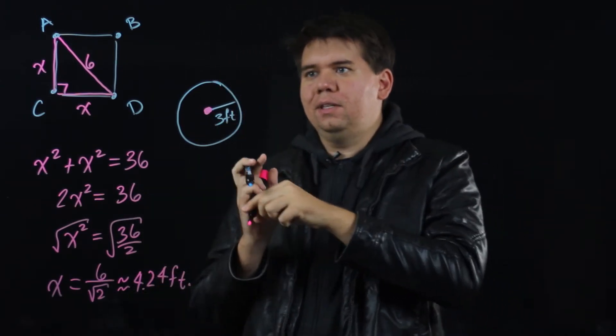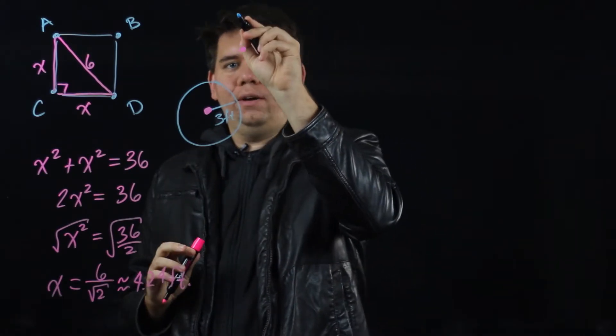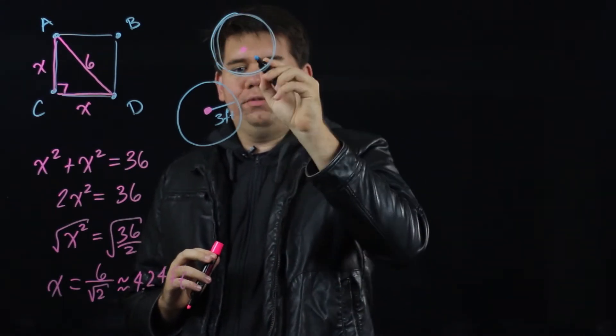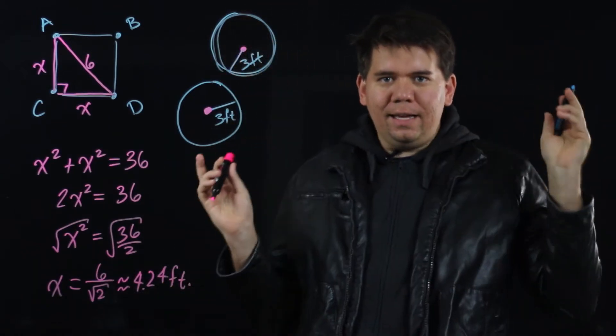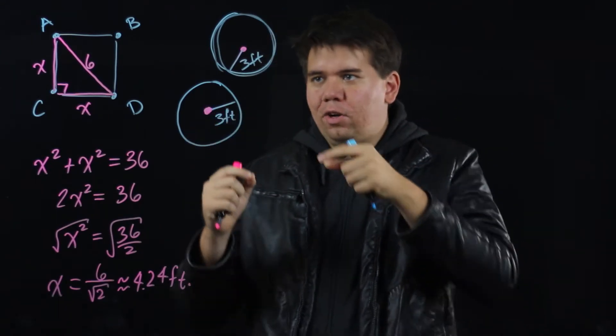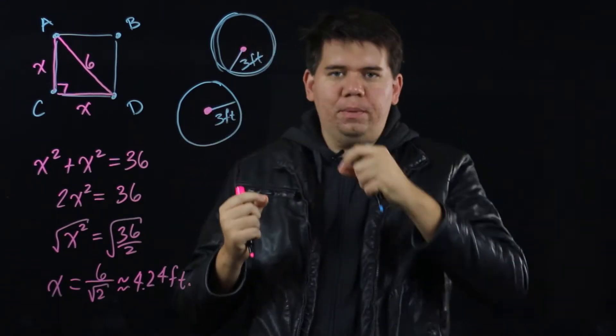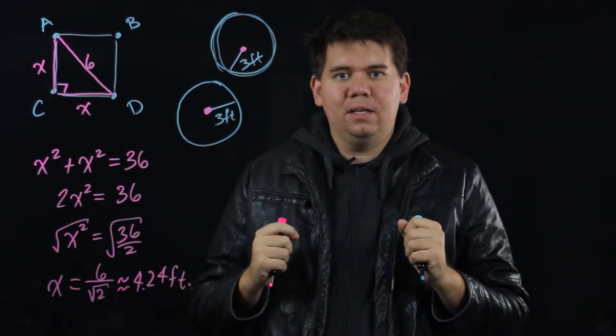And everyone else, they have around them also an imaginary circle with radius 3 feet as well. Hence that any time, as long as your circles don't overlap, as long as you avoid your circles from intersecting with each other, you'll maintain at least 6 feet between you.